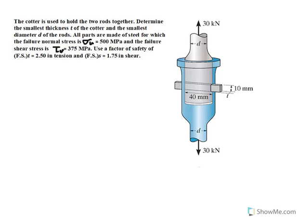You can see I have this statement of the problem here. It says the cotter is used to hold the two rods, so the cotter here is the pin, this pin right here. We want to find the thickness of the cutter, T, and also the smallest diameter D of the rod. Those are the two items that we are trying to find.